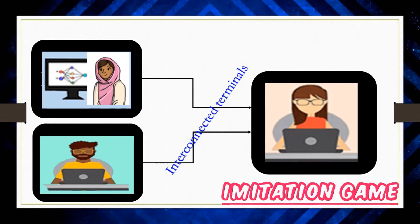The players communicate only through textual messages from one computer to the interrogator's interlinked computer. The interrogator, who can be of any gender, knows the person in the first room as X and the person in the second room as Y — that means the woman is coded as X and the man as Y. The purpose of the interrogator is to identify who is a man and who is a woman. This is the original imitation game developed by Alan Turing.